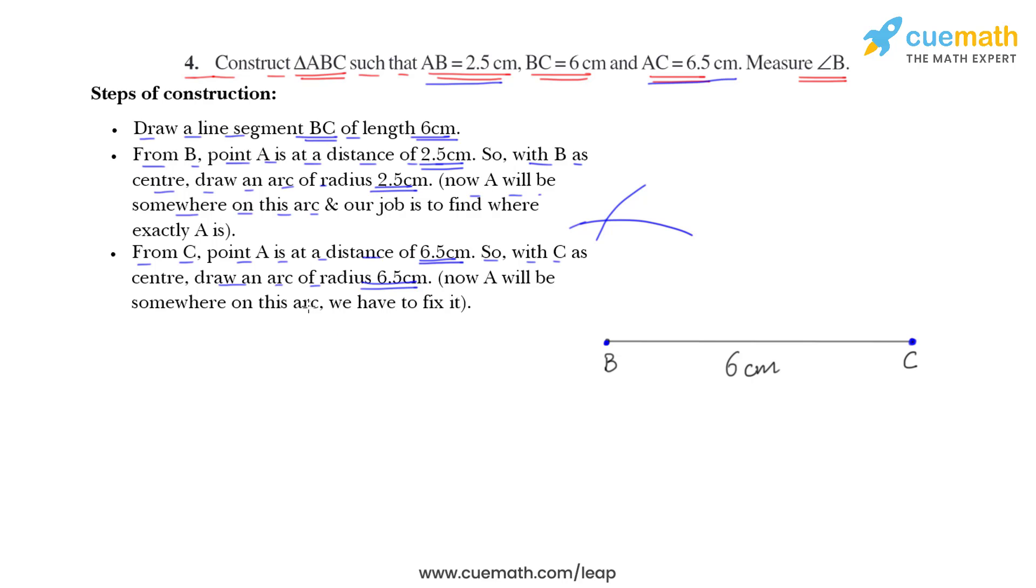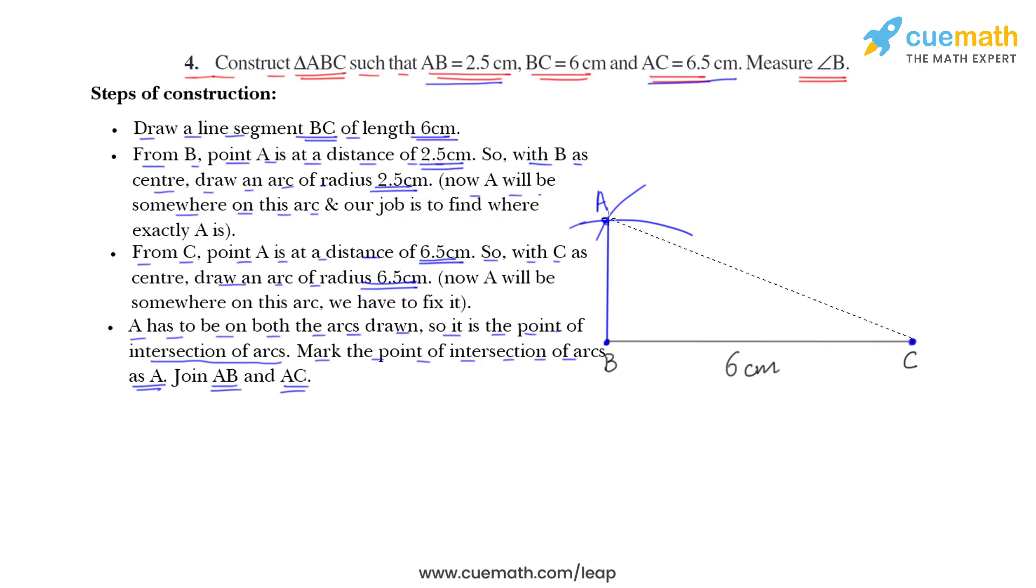Now, again, point A will lie on this arc also and as A has to be on both the arcs drawn, so it is the point of intersection of arcs. Mark the point of intersection of arcs as A, join AB and AC. So, we will mark the point of intersection as point A, then join AB and AC. Join A with B and join A with C.